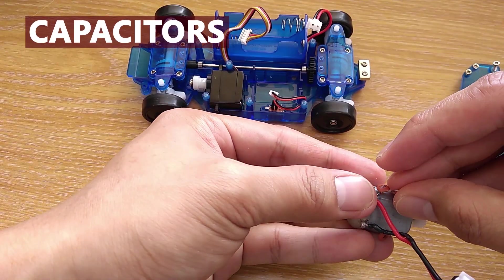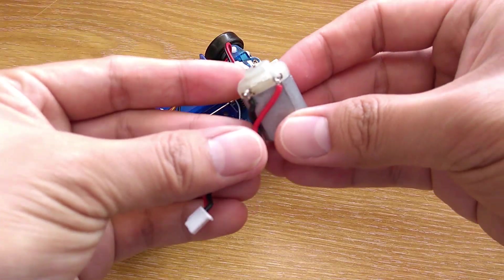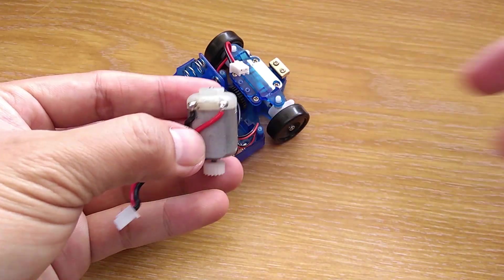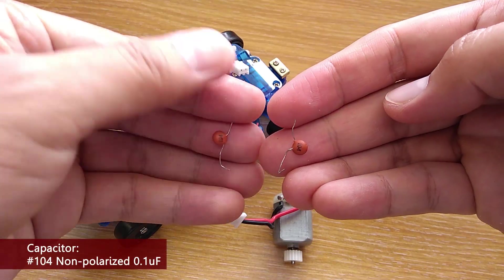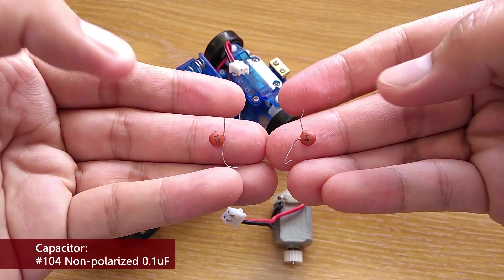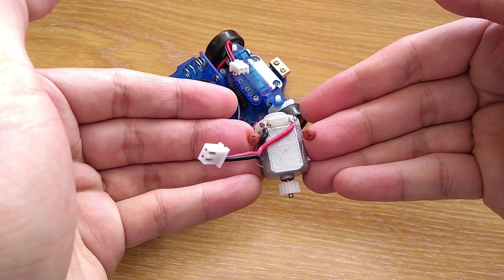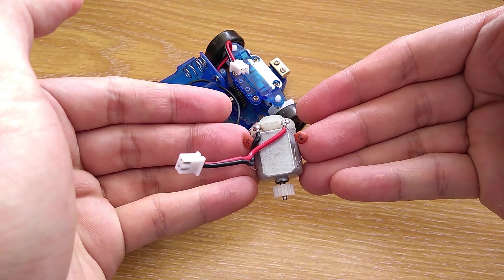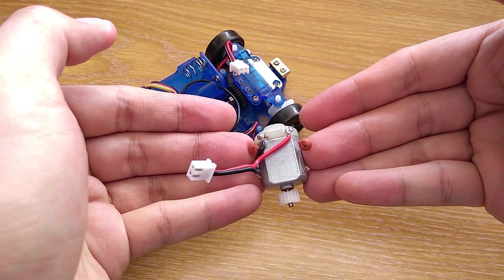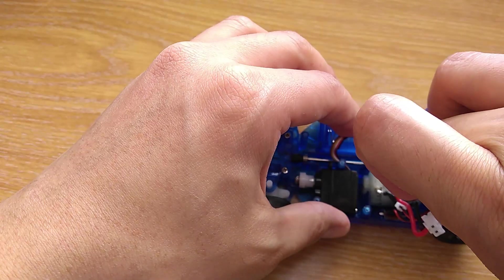Next, I'll solder some capacitors to the motor to reduce the electrical noise. I'm still using the original motor because it is already enough for drifting. The capacitor I need is non-polar, number 104 or 0.1uF. There are 3 configurations of doing this: 1 capacitor, 2 capacitors and 3 capacitors. What I'll do is 2 capacitors where one leg is on each terminal and the other leg is on the motor can, because it is easier to fit inside the chassis this way.